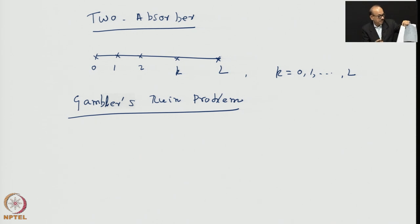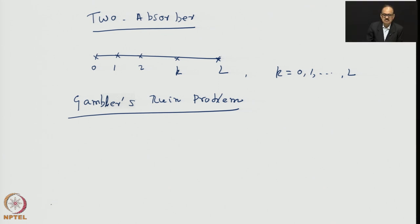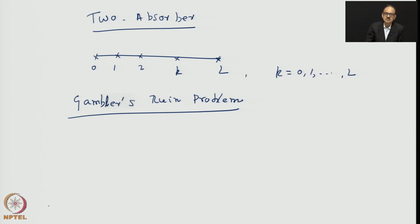A gambler starts with some initial fortune — let us say one dollar — and every time he gambles, he may lose a dollar or gain a dollar at each successive step. This could be a tossing of a coin. If the coin is fair, he loses with equal probability and gains one dollar with equal probability.